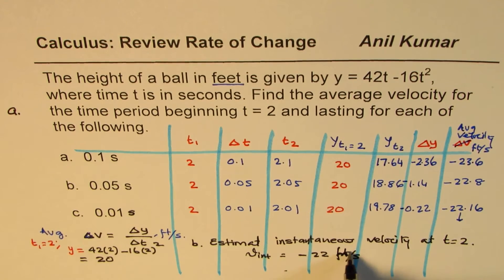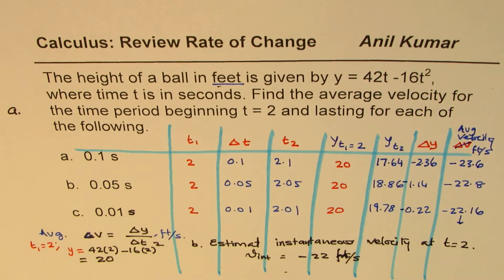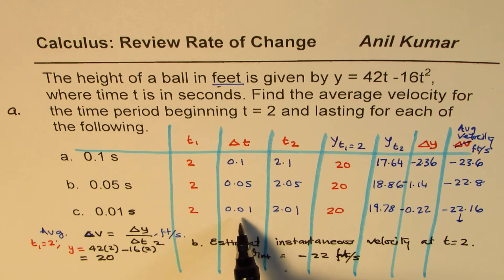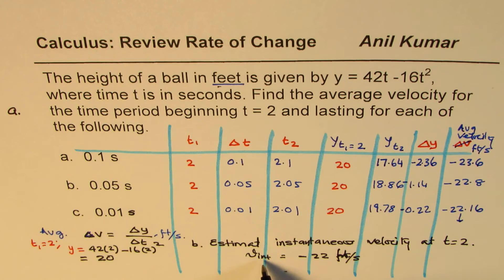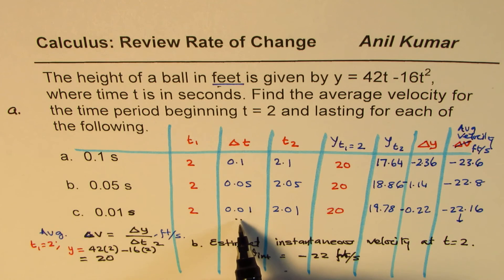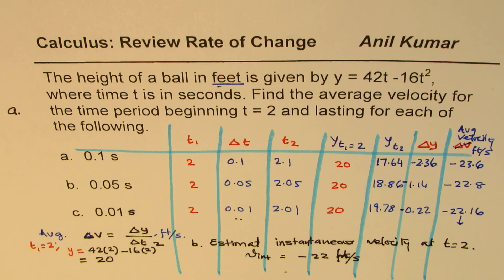As the time interval decreases, the average velocity becomes closer and closer to the instantaneous velocity. If we draw this graph, the secant represents the average velocity and the tangent represents the instantaneous velocity. As the time interval decreases, the slope of the secant becomes closer and closer to that of the tangent, and that is how we can estimate instantaneous velocity with this method. I'm Anil Kumar — I hope that helps. Thank you and all the best.